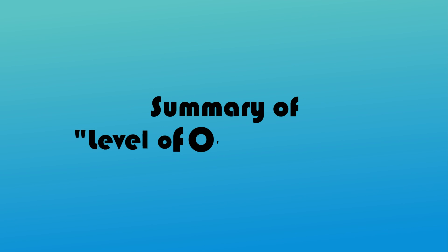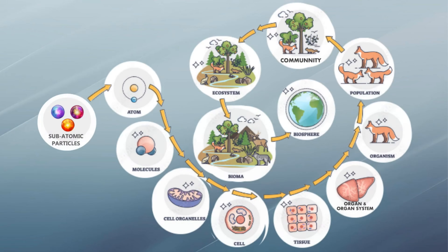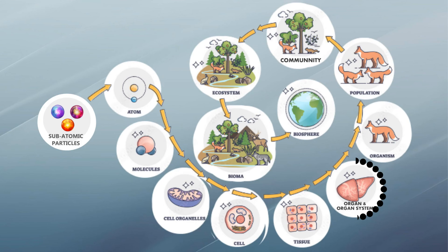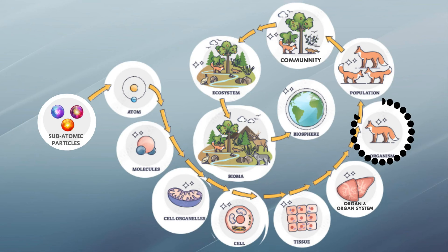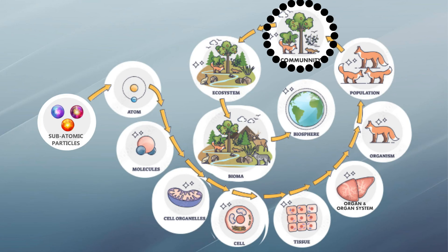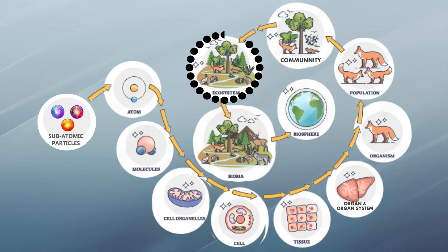Here is the summary of levels of organization: subatomic particles organize into atoms; similar atoms combine to form elements, which form molecules; molecules form organelles that organize into cells; similar cells arrange into tissues; different tissues form organs and arrange into organ systems; different organ systems form an individual; individuals lead to populations; different populations form communities; communities interact with non-living things to form ecosystems; ecosystems with similar climatic conditions form biomes, which lead to the biosphere.